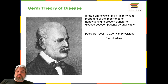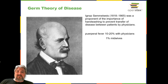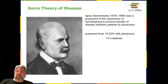Although Simmelweis did not know the true cause of puerperal fever — the true cause could be any number of pathogens — he proposed that physicians were somehow transferring the causative agent to their patients. He suggested that the number of puerperal fever cases could be reduced if physicians and medical students simply washed their hands with chlorinated lime water before and after examining every patient. When this practice was implemented, the maternal mortality rate in mothers cared for by physicians dropped to the same 1% mortality rate observed among mothers cared for by midwives, demonstrating that handwashing was a very effective method for preventing disease transmission.